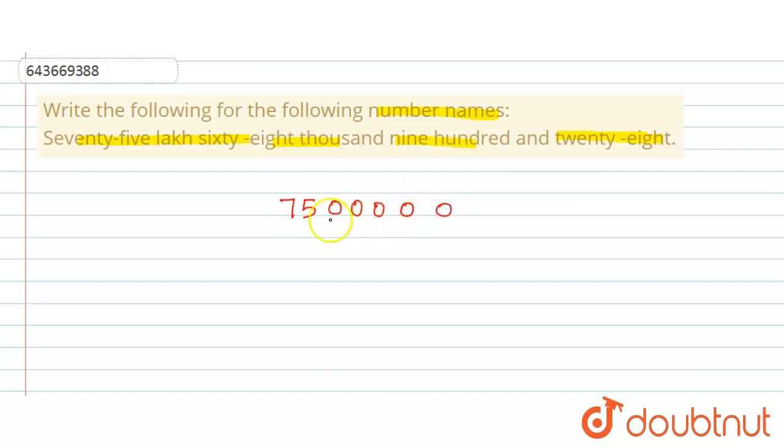Next one is we will add sixty-eight thousand. So sixty-eight thousand here, this can be written as below here, sixty-eight thousand.